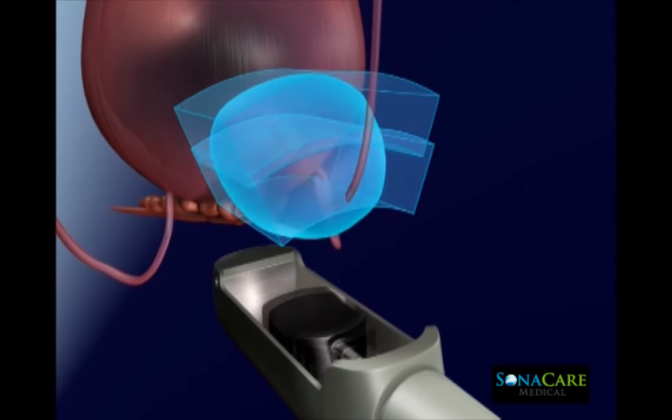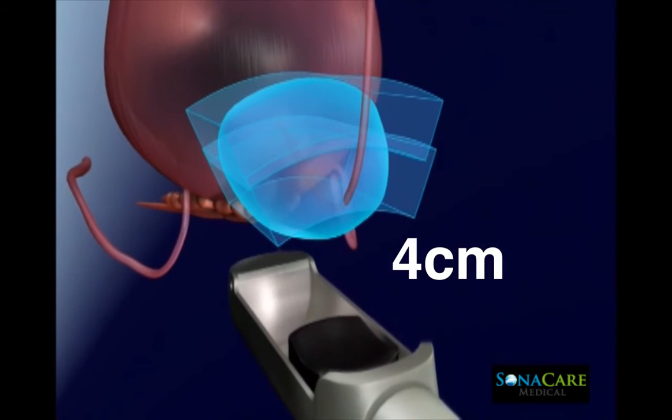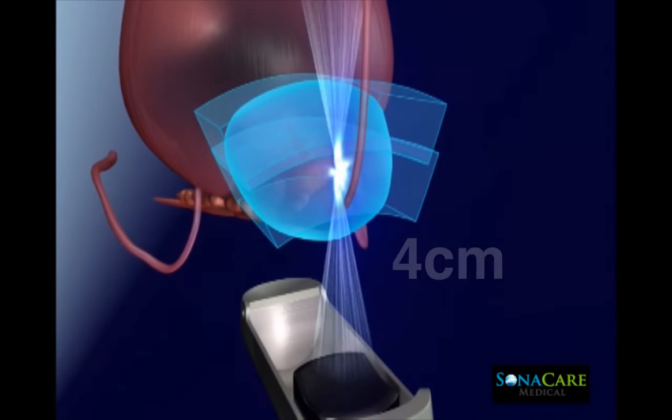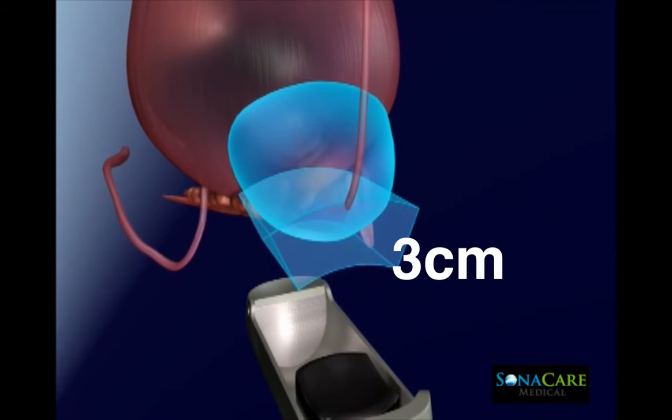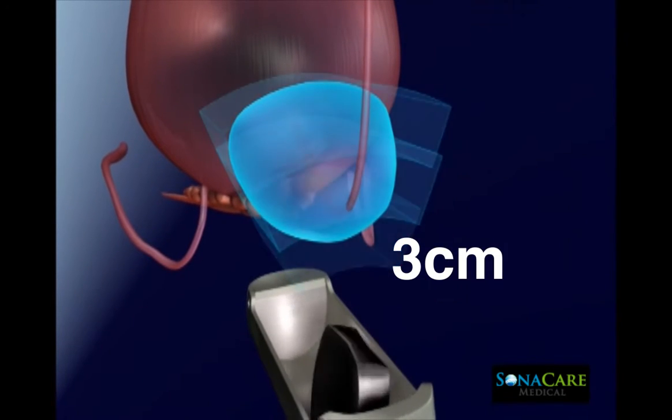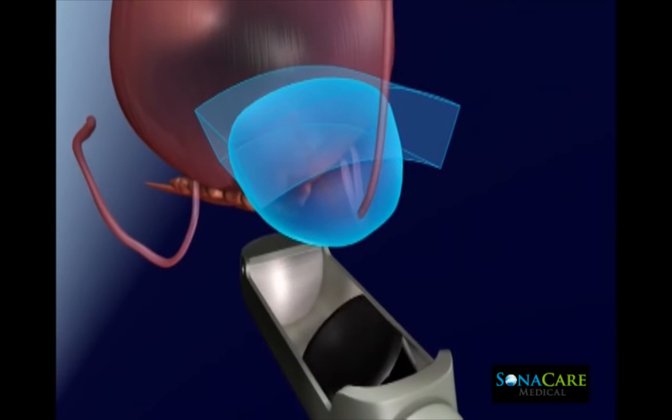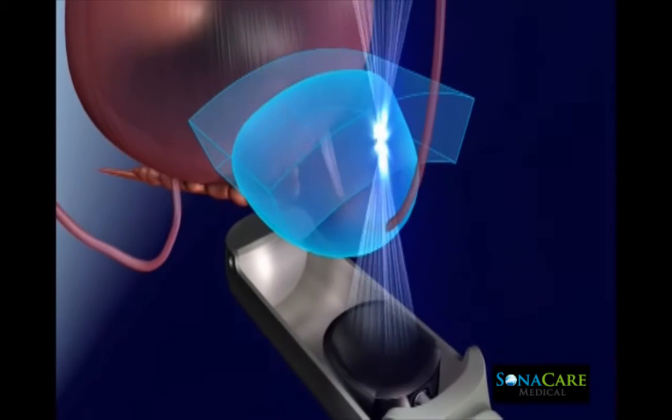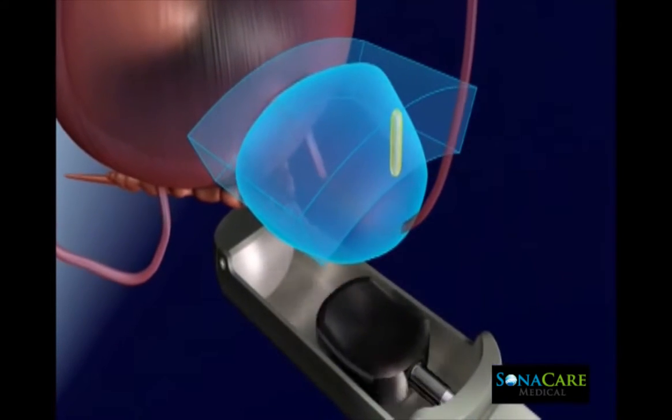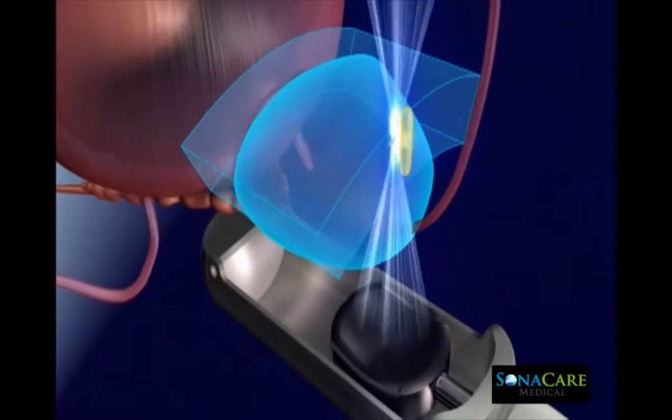Precise focusing of ultrasound energy during a HIFU procedure rapidly elevates the temperature of the tissue in the focal zone, resulting in tissue destruction. Intervening tissue between the transducer and the focal zone remains unharmed, resulting in an accurate lesion.